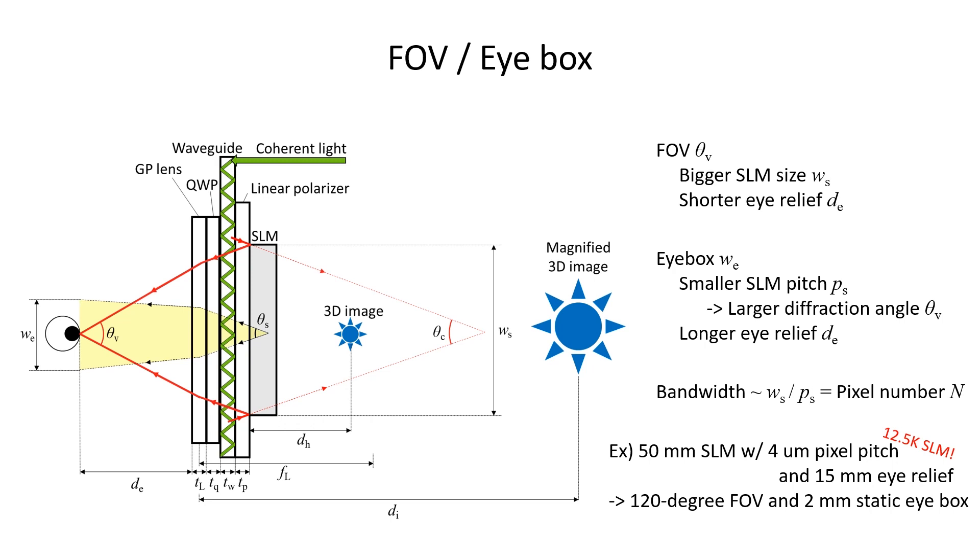By the way, the static eye box is decided by the pixel pitch of the SLM and also the eye relief. Smaller pixel pitch creates larger diffraction angle and it is helpful for the bigger static eye box.